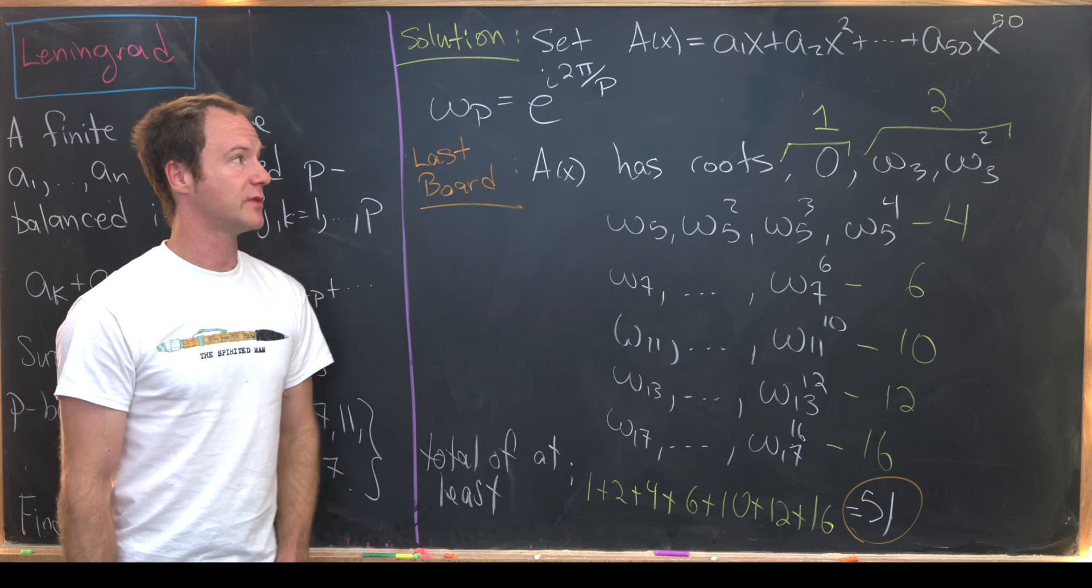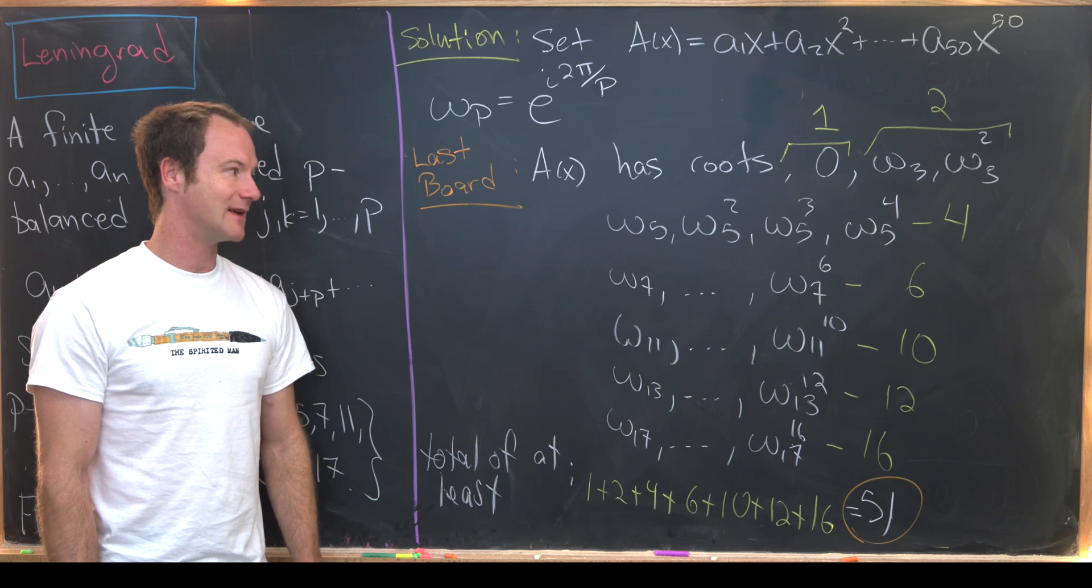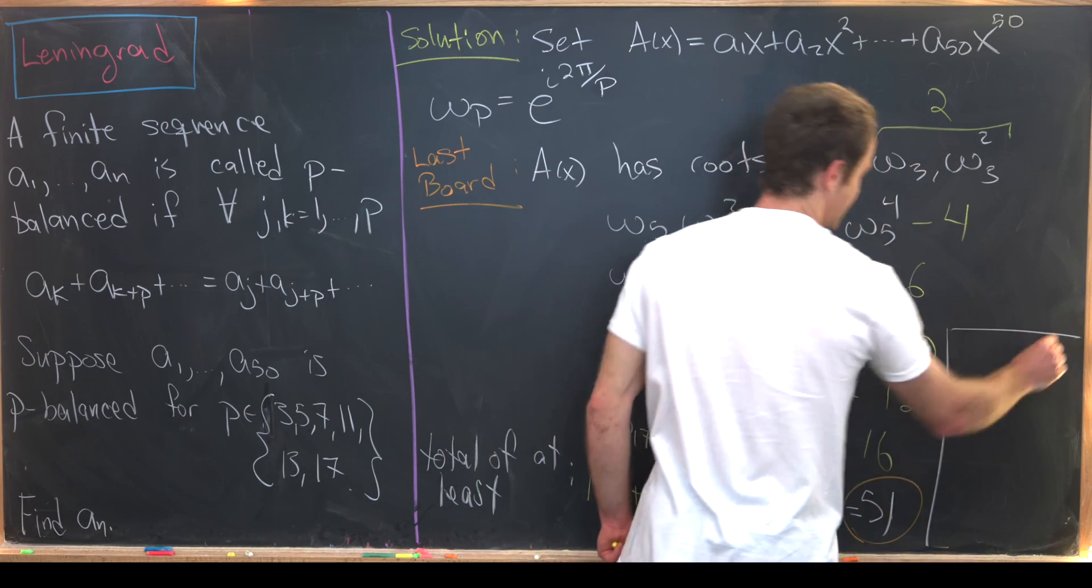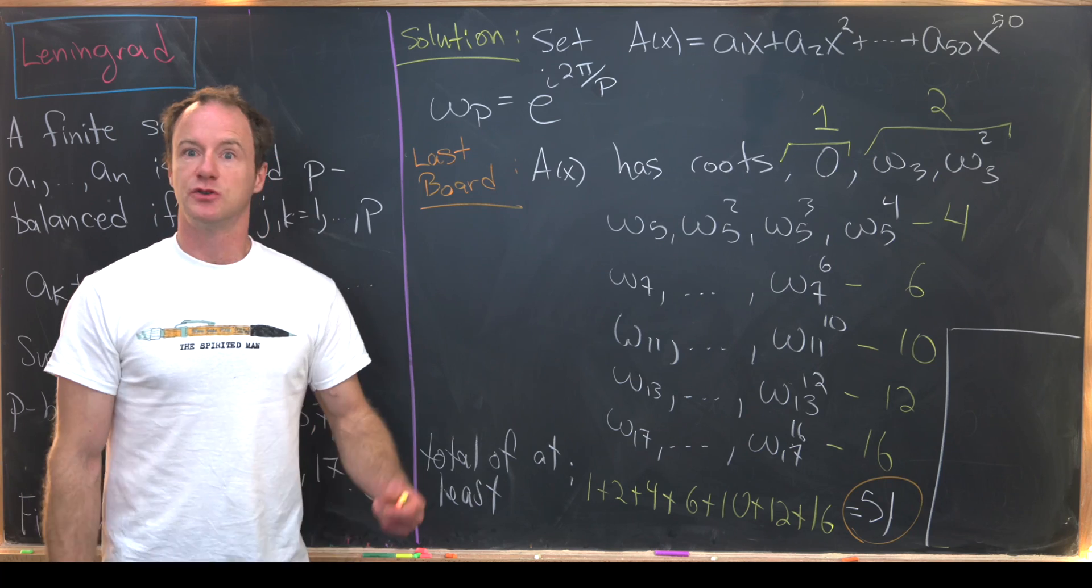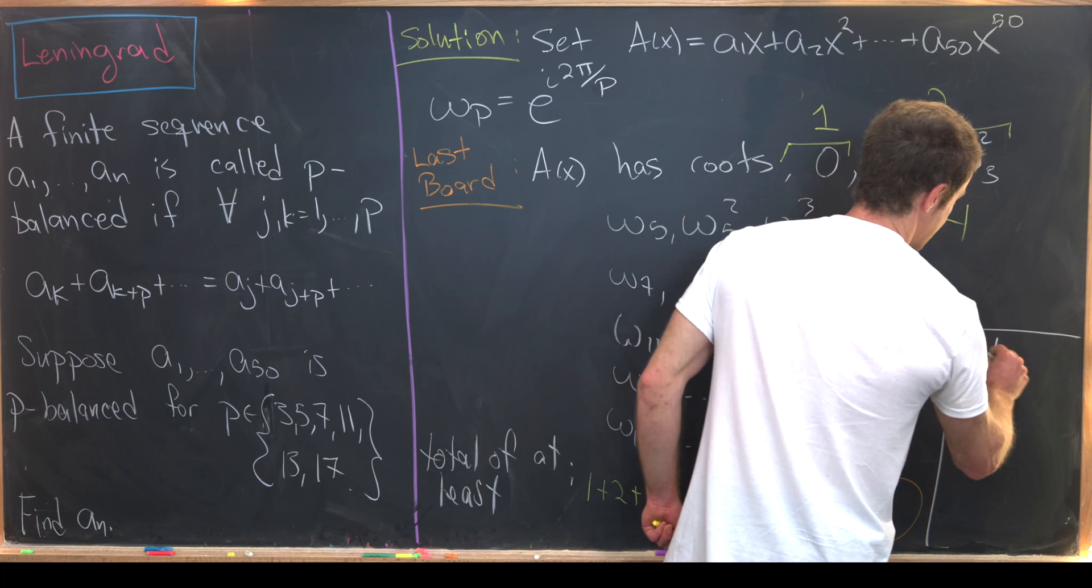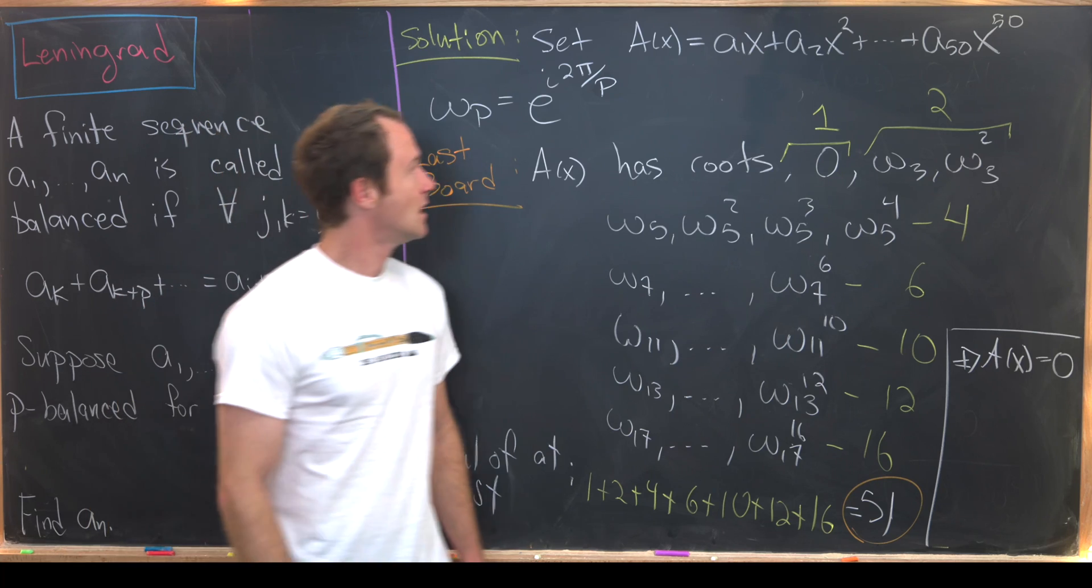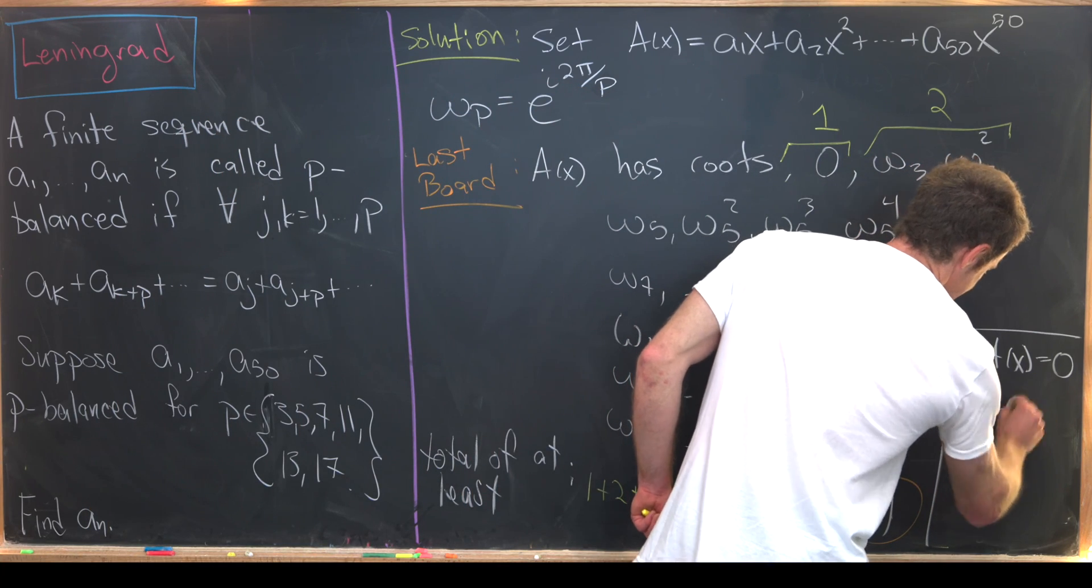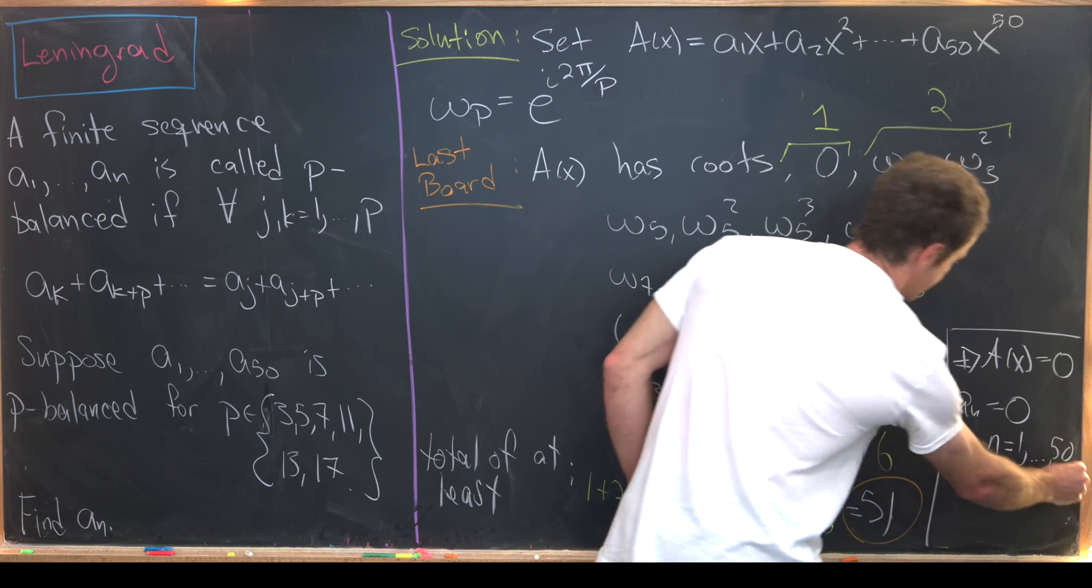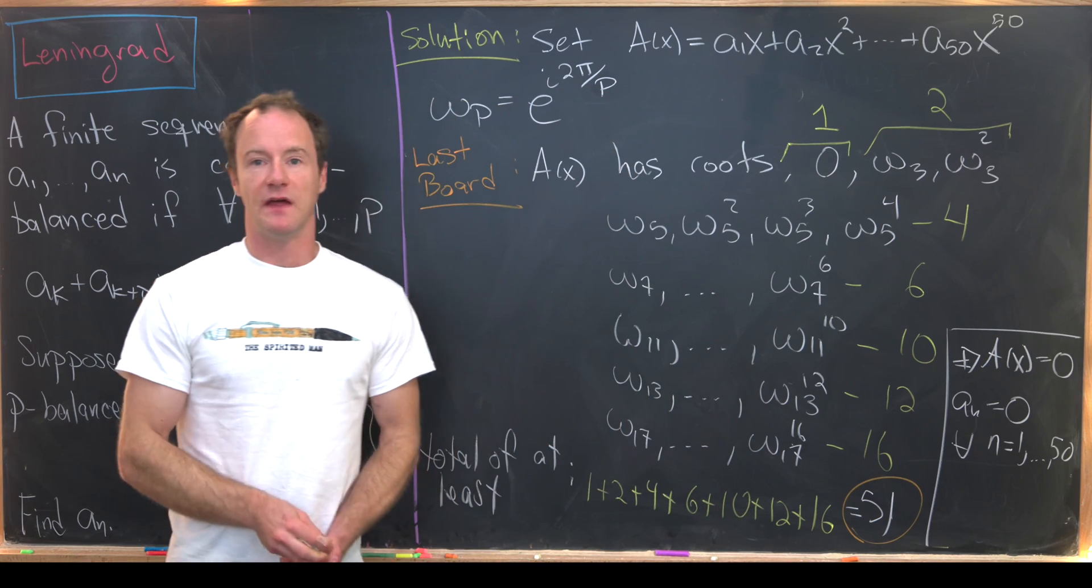So there are at least a total of 51 roots. But look, we've got a polynomial that is only degree 50. The fact that it's degree 50 means it has at most 50 roots, but we found 51 roots. So if we found 51 roots to a polynomial of degree 50, that means that polynomial must be equal to zero. So here we've got A(x) is equal to just the zero polynomial. But that tells us that a sub n is equal to zero for all n from one to 50, finishing up the final problem that we wanted to solve. And that's a good place to stop.